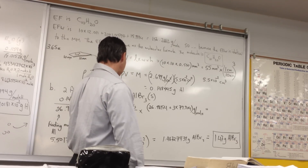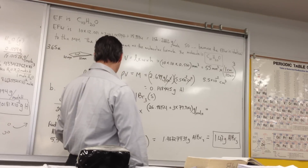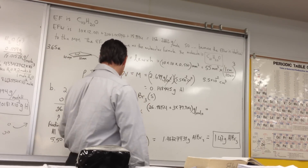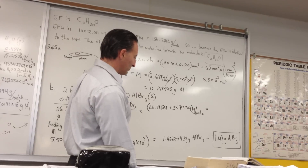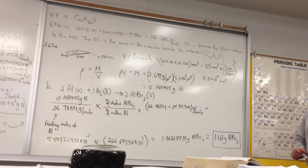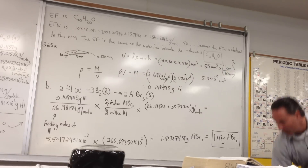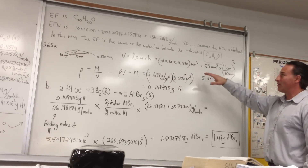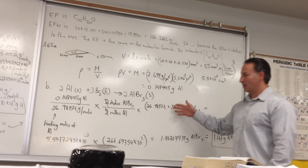Multiplying the moles of aluminum by the molar mass of aluminum bromide — since the 2-to-2 ratio is 1-to-1 — gives 1.46727439 grams of aluminum bromide. With three significant figures, we report 1.47 grams of aluminum bromide. This is a multi-step problem typical of stoichiometry questions on an exam. Each step requires proper usage of units and significant figures, and you should always check your answer, because a mistake at any point means everything after it will be wrong.